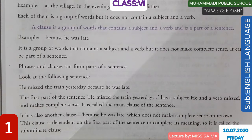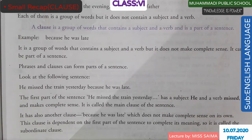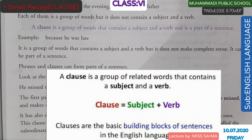Today I am repeating my first lecture for your convenience. A clause is a group of words that contains a subject and a verb and is a part of a sentence. A clause is such a group of words in which subjects and verbs are present. It is a part of a sentence.